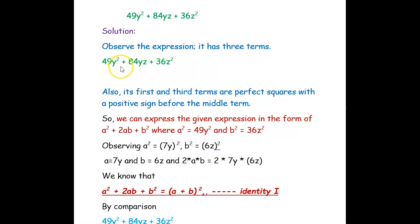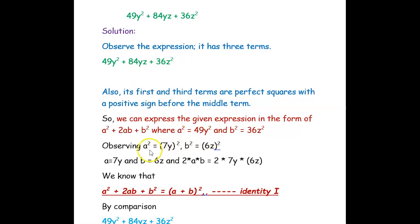Now we have to see the sign of the middle term — that is positive. So we can express the given expression in the form of a squared plus 2ab plus b squared, where a squared is 49y squared and b squared is 36z squared. Since a squared is 49y squared, we can rewrite it as (7y) whole squared, so a is 7y.